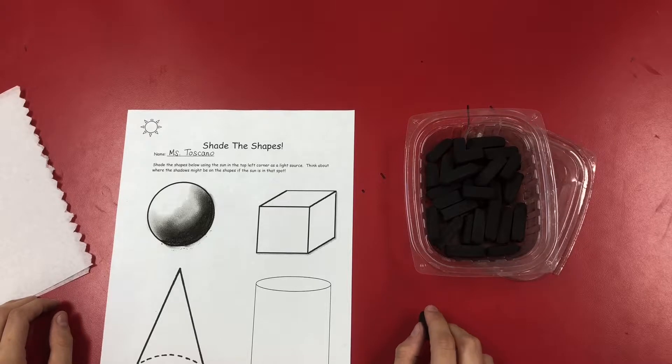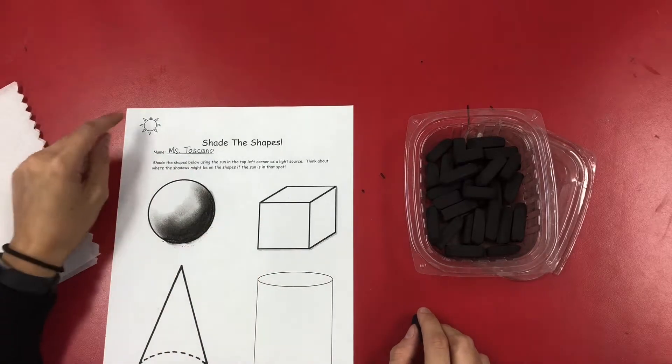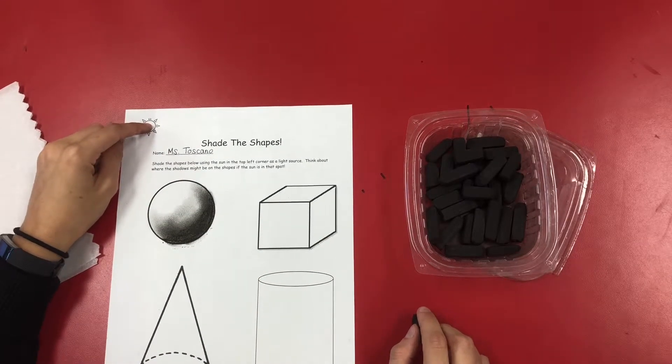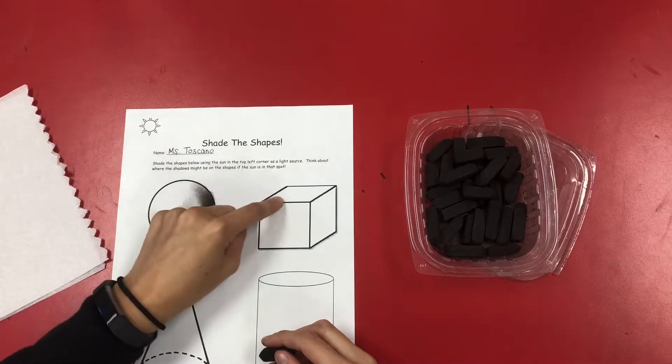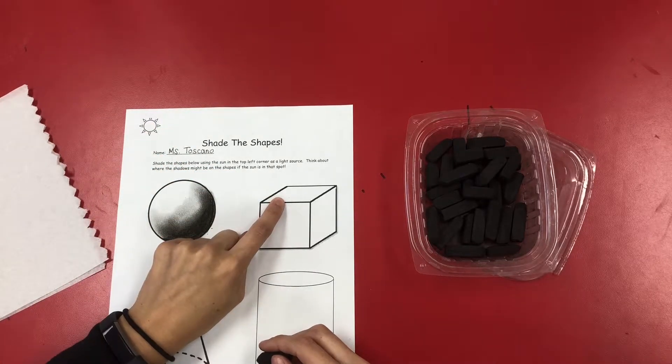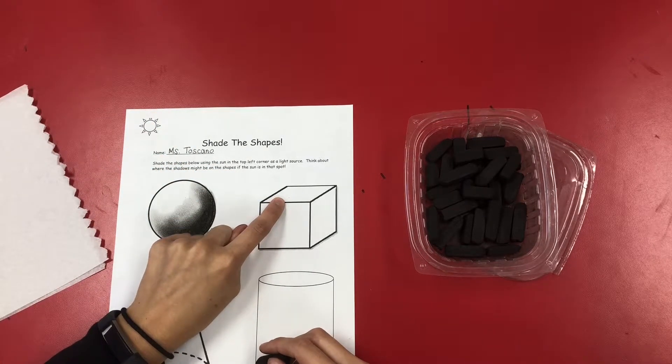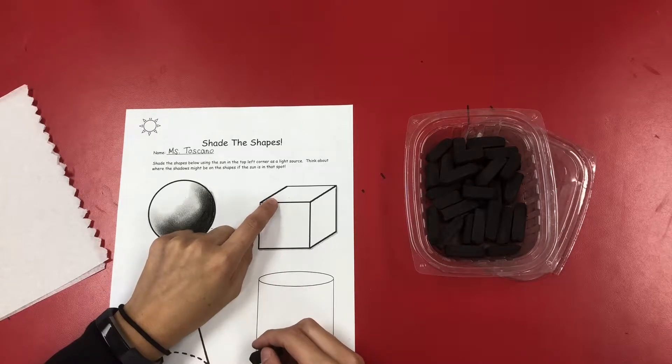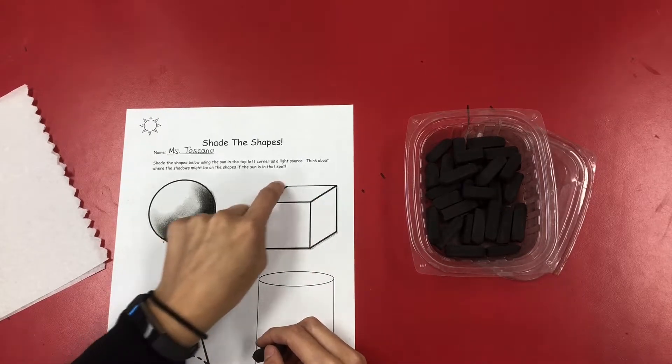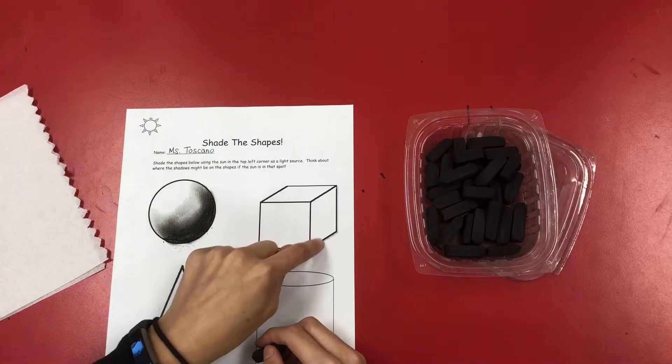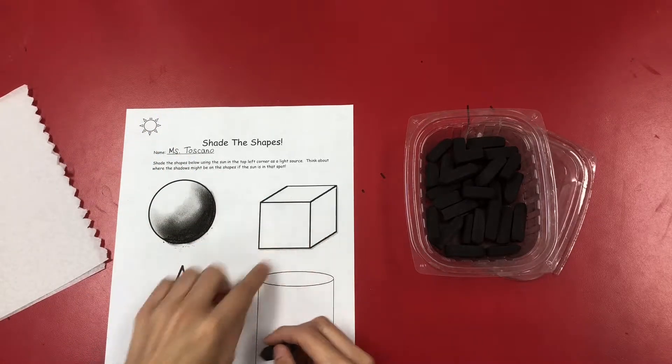Now I'm going to move on to the cube. Take a look back at your sun, draw an imaginary line with your other finger, and think about where the sun is hitting on that shape. It's probably going to be the lightest at the top of that cube, and the opposite of that would be this bottom right-hand corner.